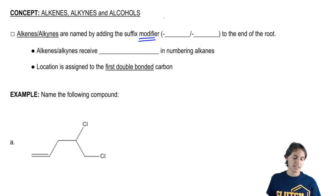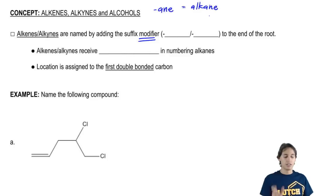What that means is that instead of using the ending '-ane,' like we always use for alkanes, we're going to modify it to either be '-ene' if it's an alkene, or '-yne' if it's an alkyne. So that's why we call it a modifier. It modifies the root name.